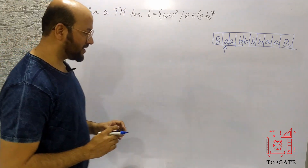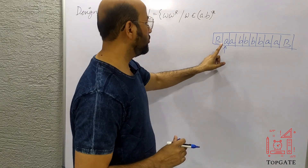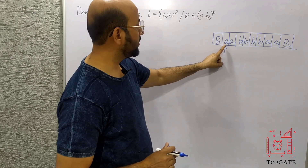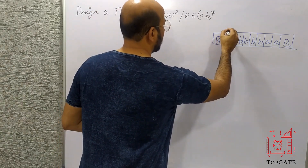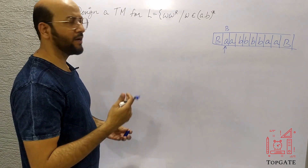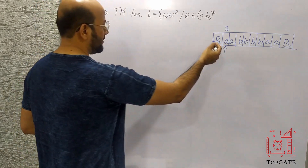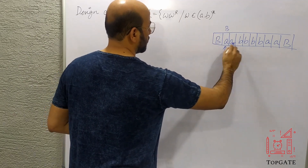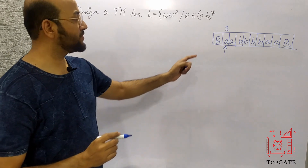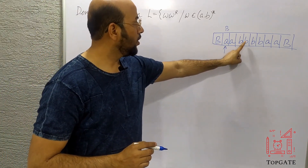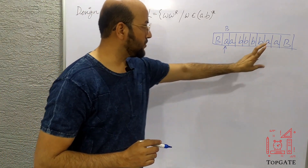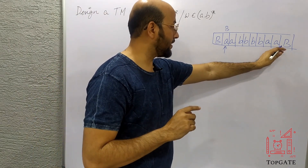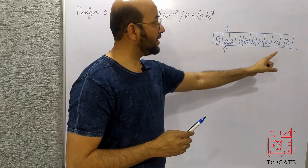The logic is simple: I know the first letter and the last letter are the same. So I will start with the first character, make it blank, then move right skipping everything — skipping all the A's and B's — until I reach the last blank on the right-hand side. From that last blank I will take a left turn, and I should find the same character that I started with. Then I make that blank too and take a left turn again, skipping all the A's and B's back, and come to the next element.